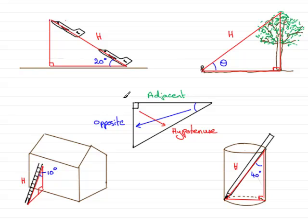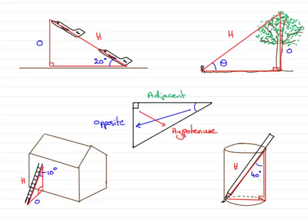Now for the opposite side — that's opposite the angle that we're always going to be looking at or working with. So in this triangle, if we've got 20 degrees here, the side opposite 20 is this side here — so that would be the opposite side. With the tree problem, if we're working with angle theta, the side opposite would be the height of the tree — I'll call that the opposite side O. With the ladder problem, the opposite side to the angle of 10 degrees would be the distance the ladder is from the base of the house. And in the pencil problem, the side that's opposite the angle of 40 degrees is the diameter of the cylinder — so that would be the opposite side.